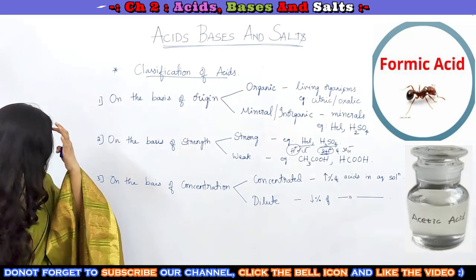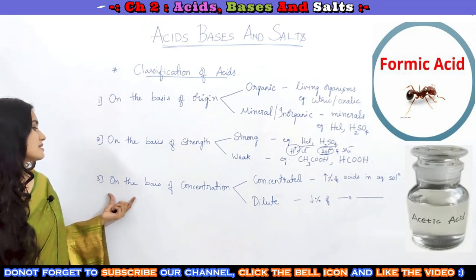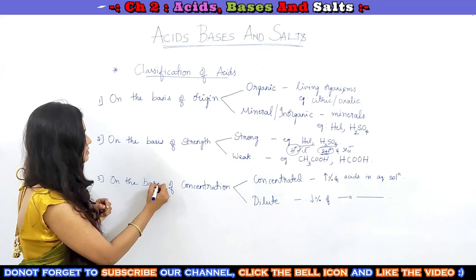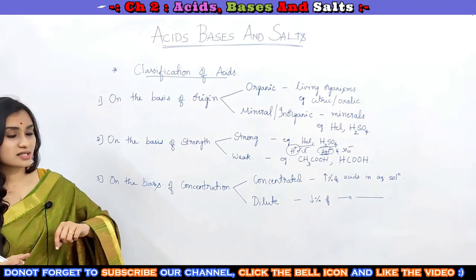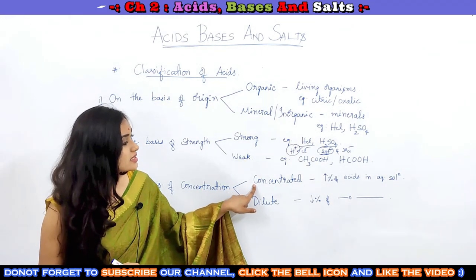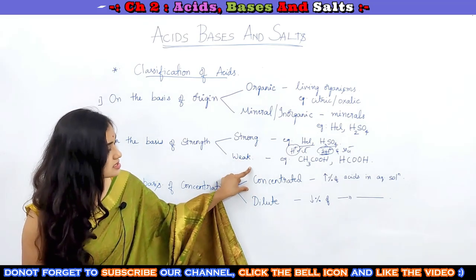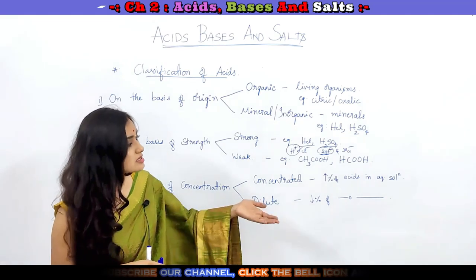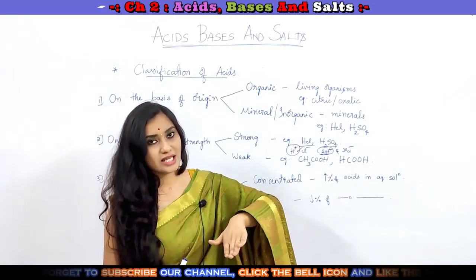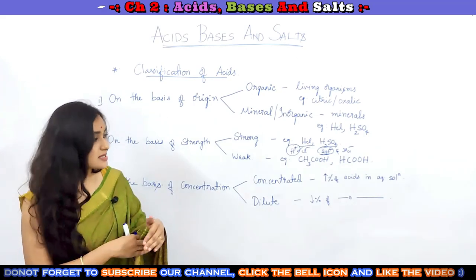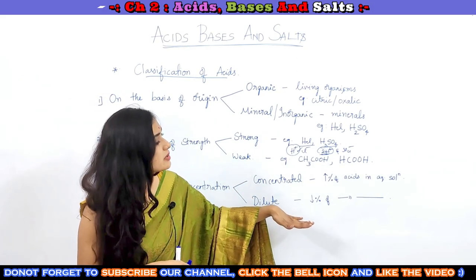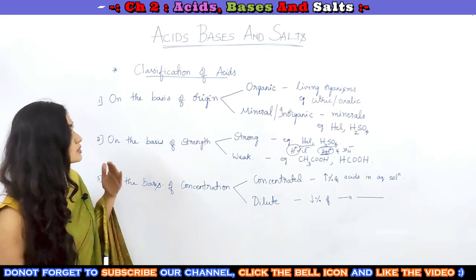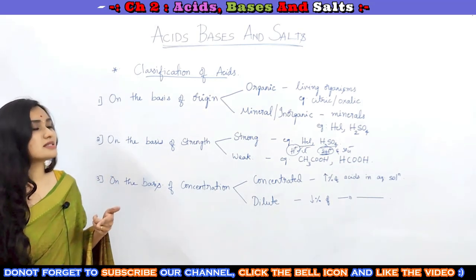On the basis of concentration, we have classified acids as concentrated acids and diluted acids. Concentrated acids are those acids which have a higher percentage of acid in the aqueous solution. Whereas diluted acids are those acids which have a lesser percentage of acid in the aqueous solution. This is all about the classification of acids.